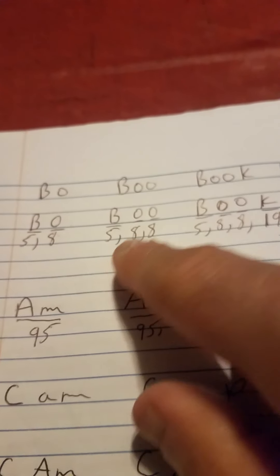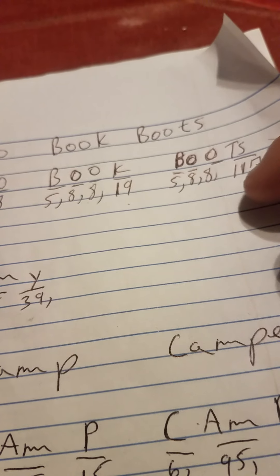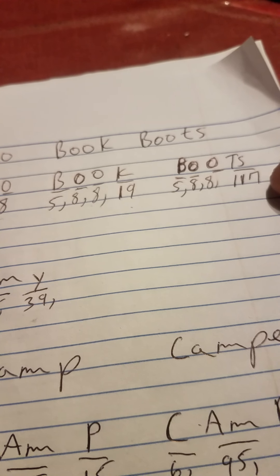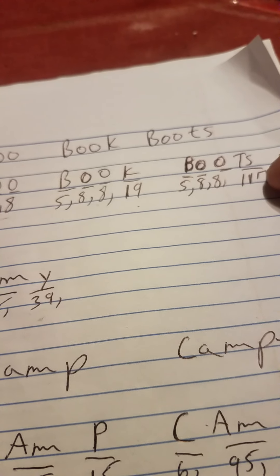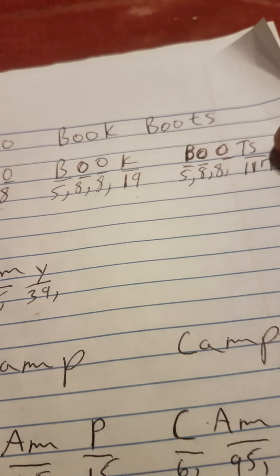So you got five, eight, five, eight, eight, five, eight, eight, and then I added 19. Then I got rid of the K and I put a capital T and a small S, which is 117 on the periodic table of elements.